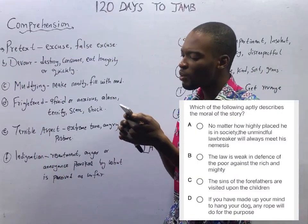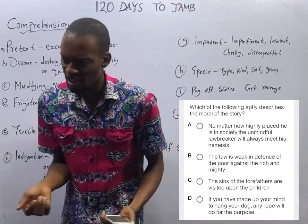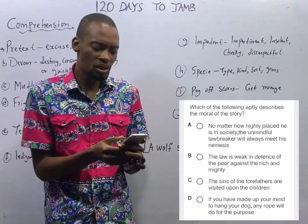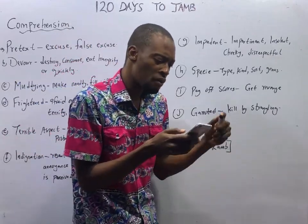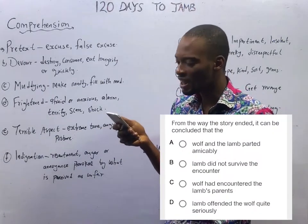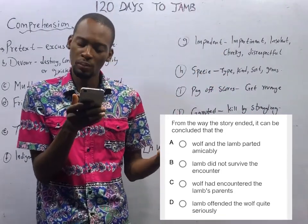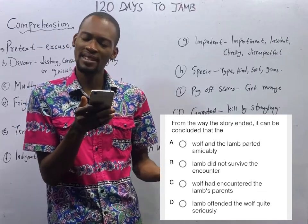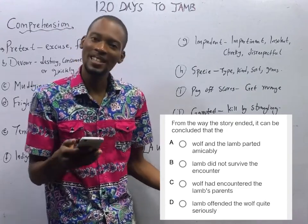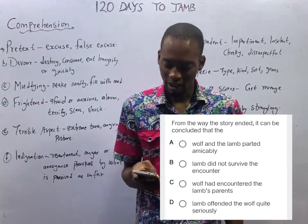The next question says: 'Which of the following aptly describes the moral of the story?' As we go through the passage, we need to ask ourselves what it is trying to teach us. And from the way the story ended, it can be concluded that: the wolf and the lamb parted amicably; the lamb did not survive the encounter; the wolf had encountered the lamb's parents; or the lamb offended the wolf quite seriously. We are not concluding yet because we have not looked at the passage.